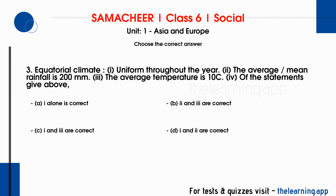Question 3: Equatorial climate — 1. Uniform throughout the year. 2. The average mean rainfall is 200 mm. 3. The average temperature is 10°C. 4. Of the statements given above. Options are: A. I alone is correct, B. 2 and 3 are correct, C. I and 3 are correct, D. I and 2 are correct. Correct answer is A, I alone is correct.